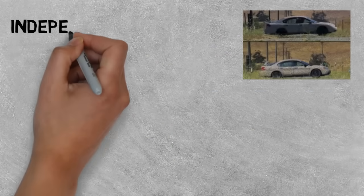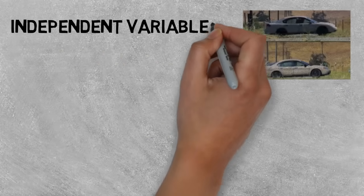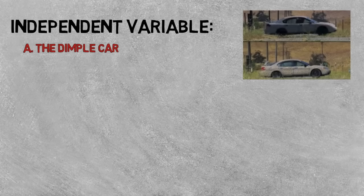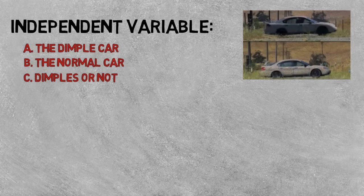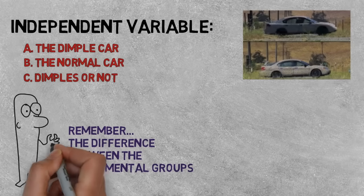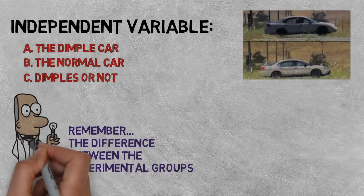So which of the following was the independent variable of their dimple car experiment? The dimple car, the normal car with clay, or whether the car had dimples or not? Remember the independent variable is the difference between the experimental and control groups.